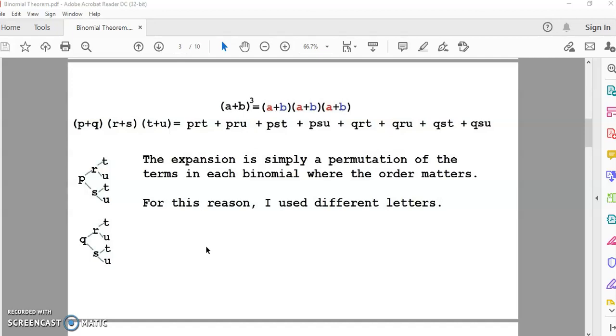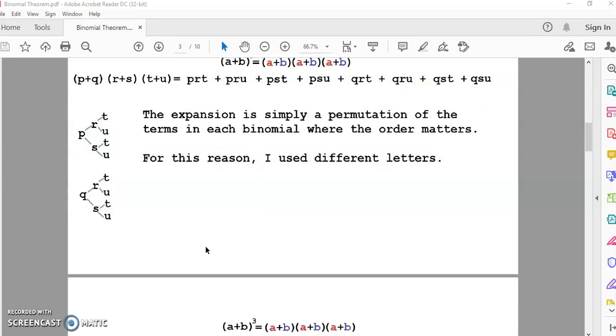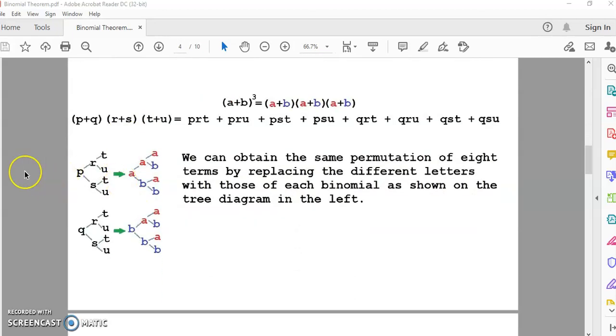So, in permutations, unlike combinations, the order of the terms or the items selected matters. So, we can obtain the permutation of these eight terms by simply replacing the different letters, as I said early on, with those of each binomial, as shown on the tree diagram in the left.